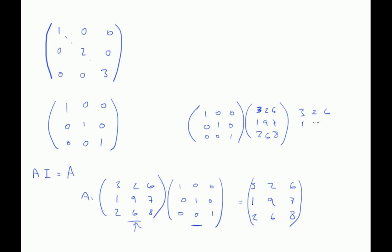So the unit matrix multiplied by A gives us A again.